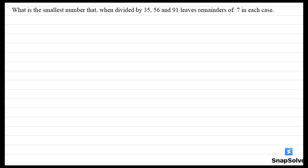Hello students, hope you are doing well. I am going to explain this question in this video. The question says: what is the smallest number that when divided by 35, 56, and 91 leaves remainders of 7?